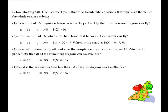Before you start Minitab, you really need to convert your binomial events into equations, or break down the parts that represent the values for what you are solving, so that when you input your data into Minitab you know exactly what you're solving. I've converted each one of these questions into the individual components of a binomial. I have the value for n for all four, which are my sample sizes: 16 dragons in the first two questions, 13 dragons in the next two questions.